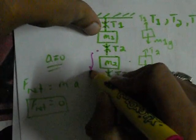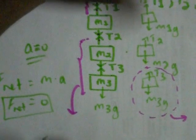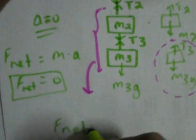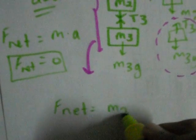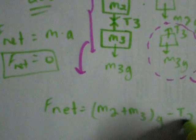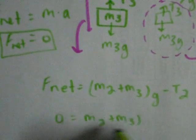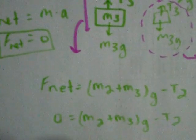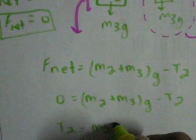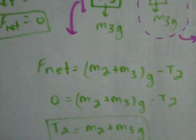Now, to calculate T2, see, this string is holding both of these blocks. So while calculating T2, we have to take both of these blocks in consideration. That is, F net is equal to M2 plus M3 as a whole, G minus T2. So we get T2 as M2 plus M3G.